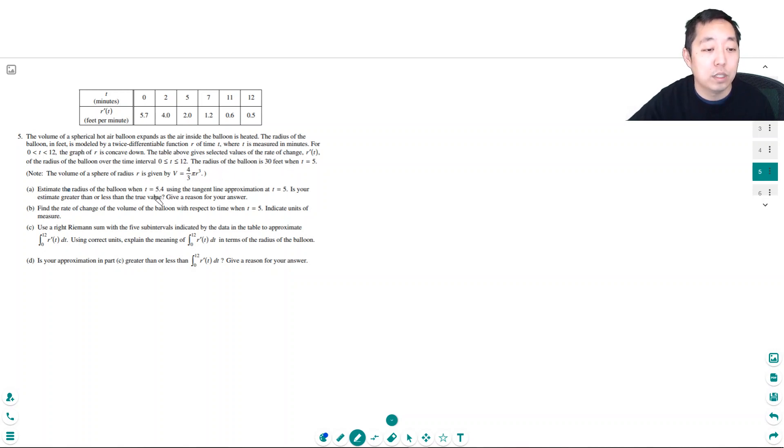The radius of the balloon is 30 feet when t equals 5. Estimate the radius of the balloon when t equals 5.4 using the tangent line approximation at t equals 5. Is your estimate greater than or less than the true value? Give a reason for your answer.